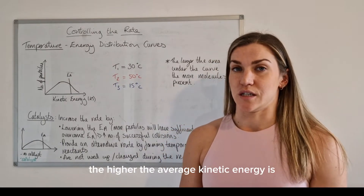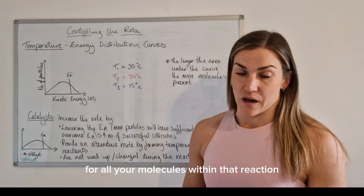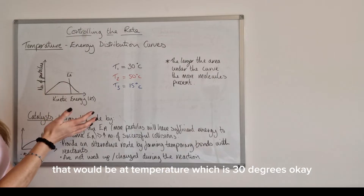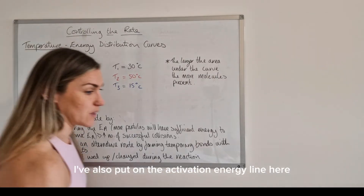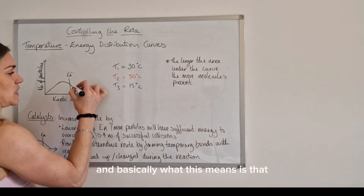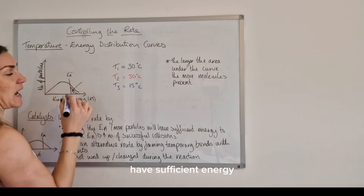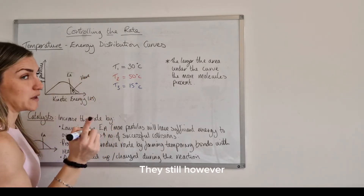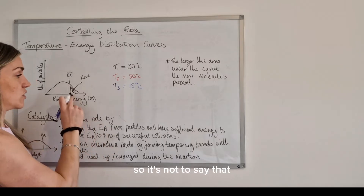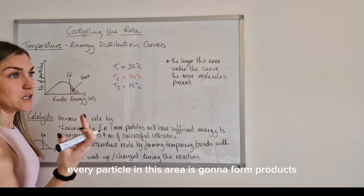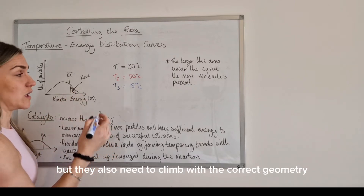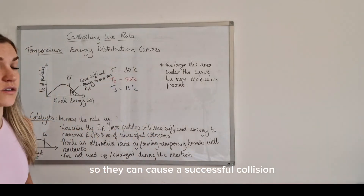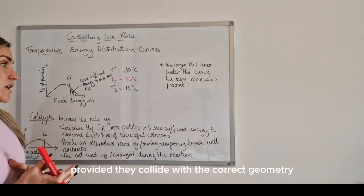The higher the temperature, the higher the average kinetic energy for all molecules in that reaction. Here's an example of a curve at 30 degrees. I've also put on the activation energy line — any particles in the area past that line have sufficient energy to overcome the activation energy and form an activated complex. They still need to collide with the correct geometry as well, so it's not guaranteed every particle there will form products, but they do have sufficient energy to cause a successful collision provided the geometry is correct.